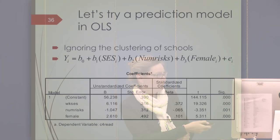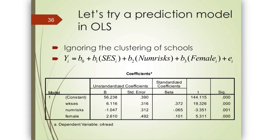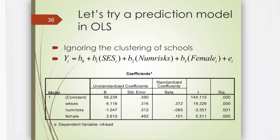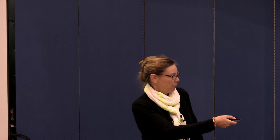First, an ordinary least squares model — a single-level regression with no adjustment for clustering of kids within schools. Predicting reading achievement from SES, number of family risks, and gender, all of these are statistically significant. Of course with 2,000 kids that's probably not unusual. This is data from the end of spring, first grade.